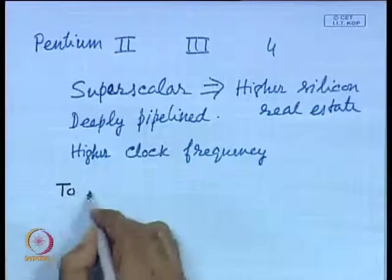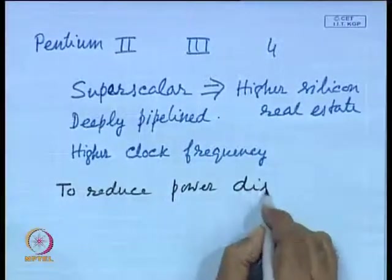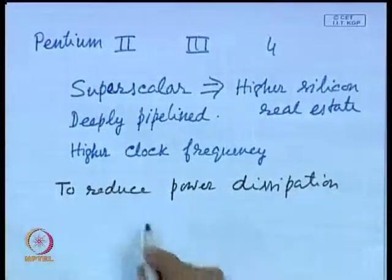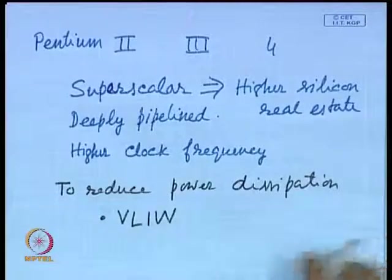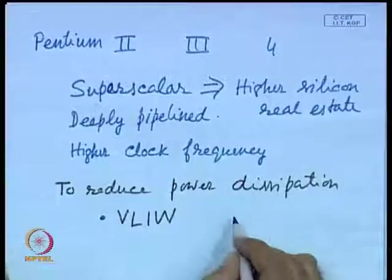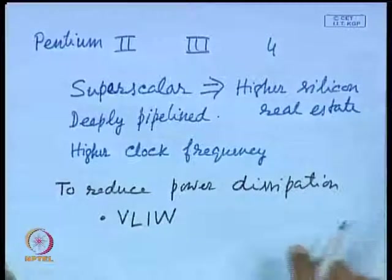To reduce power dissipation, one approach is to use VLIW — Very Large Instruction Word — where instruction scheduling is done with the help of the compiler. Instead of being done by hardware, it is done by software. As a consequence, chip area reduces and power dissipation reduces. This approach has already been discussed, and there are processors based on it like the Transmeta Crusoe processor.